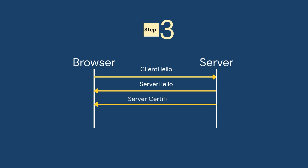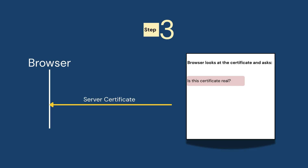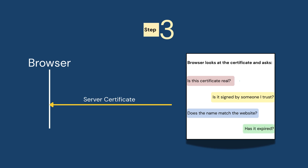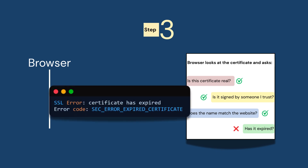Step number three: your browser checks the server's ID. It looks at the certificate and asks: Is this certificate real? Is it signed by someone I trust? Does the name match the website? Has it expired? If all is good, we move on. If any of these checks fail, the browser shows a certificate warning.